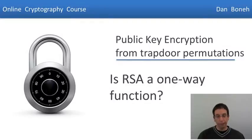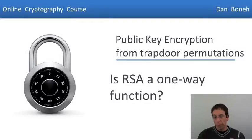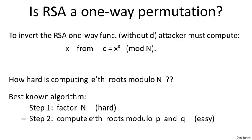The next question we're going to ask is: is RSA really a one-way function? In other words, is it really hard to invert RSA without knowing the trapdoor?